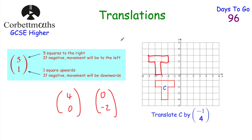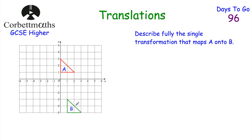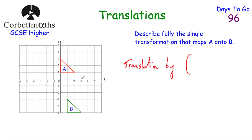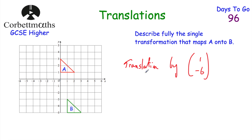Now let's look at describing a translation. We've got shape A and shape B on a grid and we've been asked to describe fully the single transformation that maps A onto B. To get from A to B, first we state it's a translation, then we write the vector. Moving from A to B we go one square to the right and six squares down, so the vector is (1, -6) — one to the right and six down. That's the full description. For more practice, there's a link to translation practice questions in the description below.